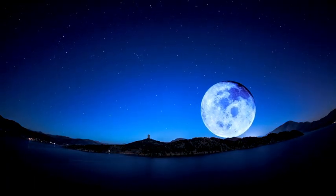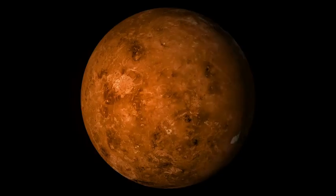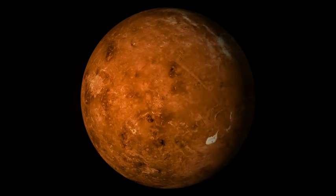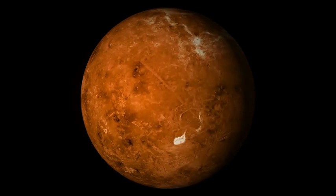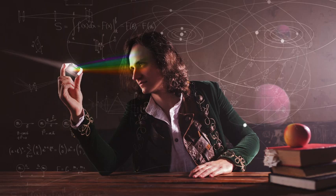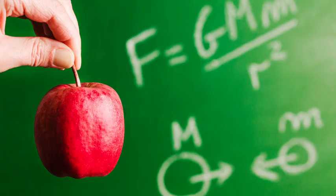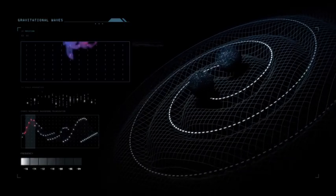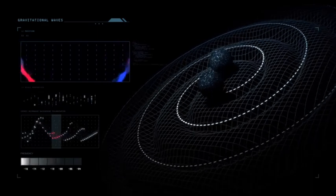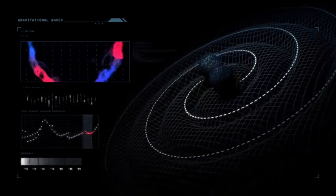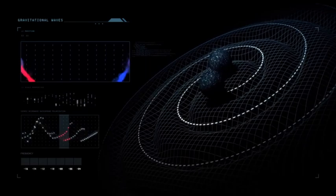Sir Isaac Newton developed further ties between physics and astronomy through his law of universal gravitation. Realizing that the same force that attracts objects to the surface of the earth held the moon in orbit around the earth, Newton was able to explain in one theoretical framework all known gravitational phenomena.